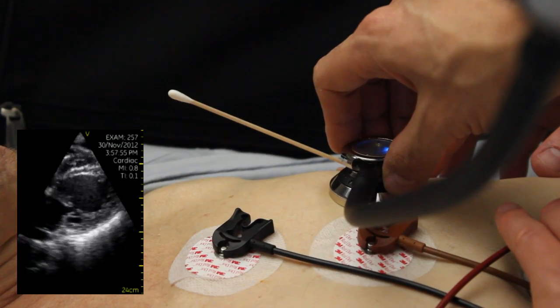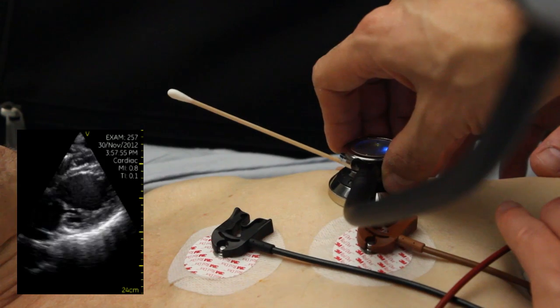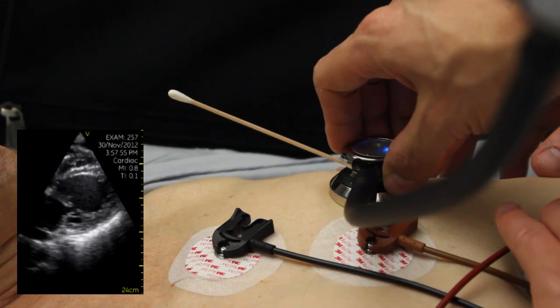In a normal heart, a contraction will cause a singular upward deflection of the cotton swab, or a singular impulse.